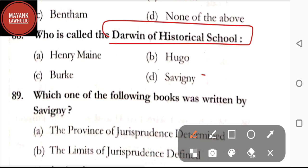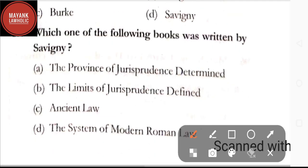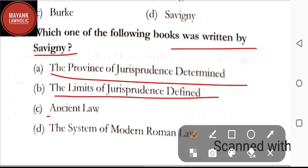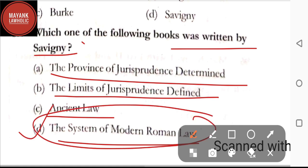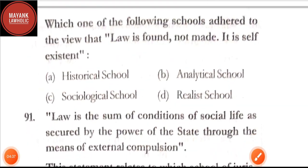Question number 88: who is called the Darwin of historical school — option A: Henry Maine; option B: Hugo; option C: Burke; option D: Savigny. The correct answer is option D, Savigny. Question number 89: which one of the following books was written by Savigny — option A: The Province of Jurisprudence Determined; option B: The Limits of Jurisprudence Defined; option C: Ancient Law; option D: The System of Modern Roman Law. The correct answer is option D, The System of Modern Roman Law — whereas The Province of Jurisprudence Determined was written by Austin.